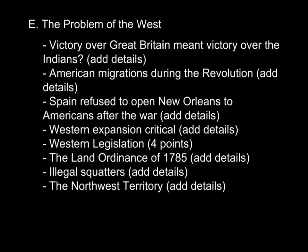American leadership saw the West as critical to its continued development as a nation, and as a result this was one of the main negotiation issues after the war. Spain was extremely frightened of the expansionistic motivations of the Americans, and so they closed their port of New Orleans to the Americans, making the Mississippi River unusable. But this only postponed the problems that would later come to fruition in regards to territorial expansion.